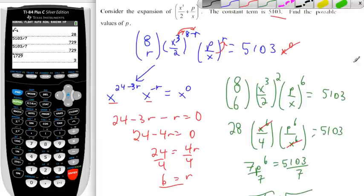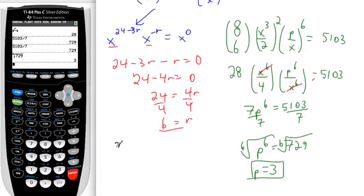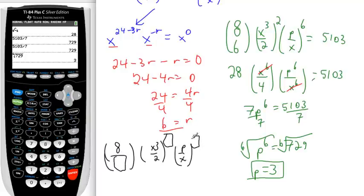I can walk through it here again, maybe in black. If we have a look at an alternative method here. Right from the start, you know that you're going to have 8 choose something. And then you have x cubed over 2, something here, something here. And p over x, something here, equals the constant. So the traditional approach is using this algebra to solve it.